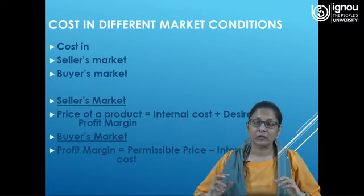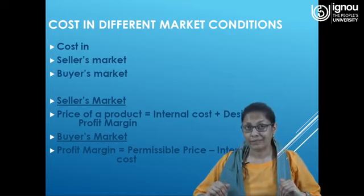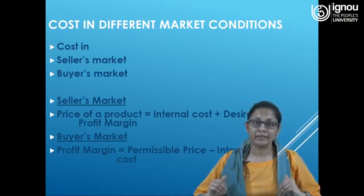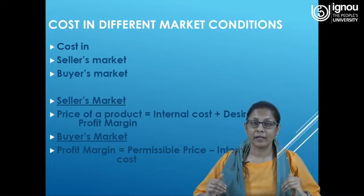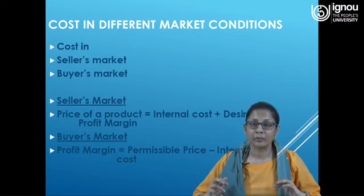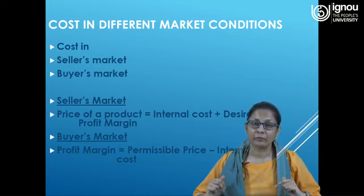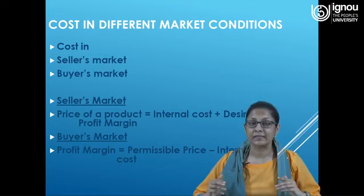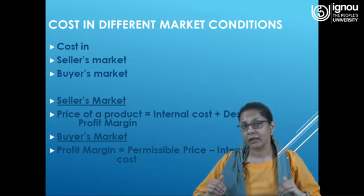When we discuss cost in different market conditions, there are two market conditions: the seller's market and the buyer's market. At present, both markets are facing problems in a critical situation like COVID-19 — they exist but cannot reach each other. In the seller's market, the price of a product is determined by internal cost plus desired profit margin. In the buyer's market, the profit margin is related to the permissible price which has to be deducted with the internal cost.